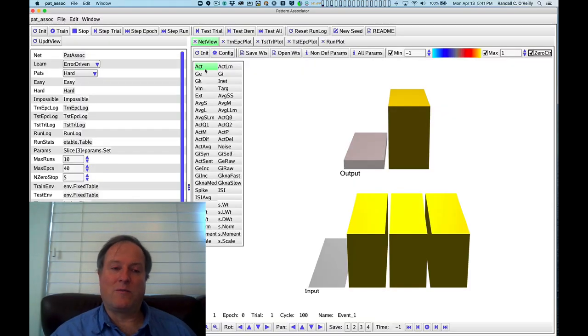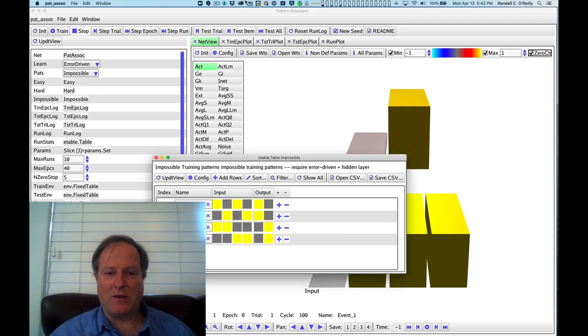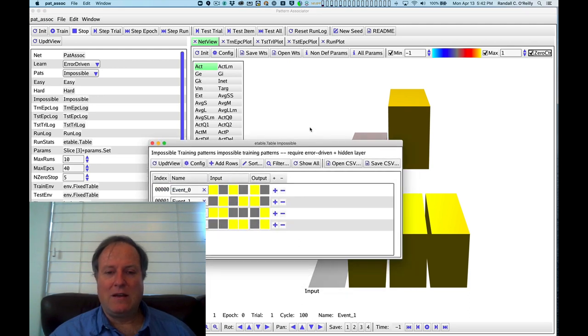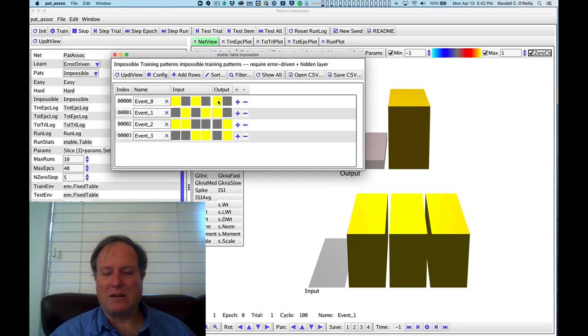However, there's still another problem, and we'll see this here as we have this particular simulation up. What if we do the impossible task? What is the impossible task? Well, the impossible task involves a particularly diabolical pattern of inputs that you're trying to map onto the outputs.